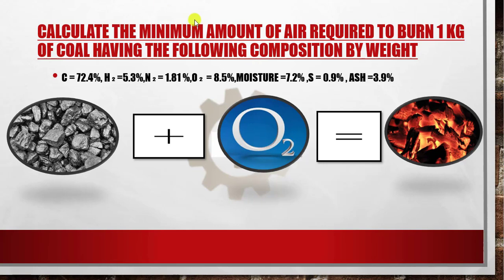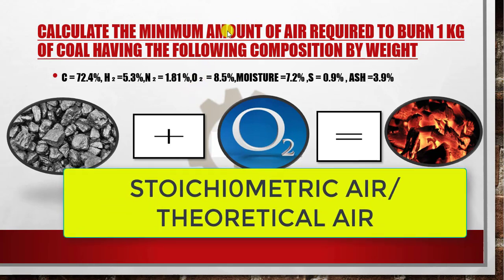Hello students. In this video I am going to tell you how to calculate the minimum amount of air required to burn 1 kg of coal. The composition is given here by weight, and it includes carbon, hydrogen, nitrogen, oxygen, moisture, sulfur, and ash. For burning of coal we need oxygen. This stoichiometric air, or theoretical air, is known as the minimum amount of air which supplies the required amount of oxygen for complete combustion of fuel.